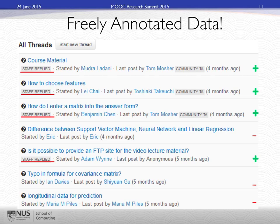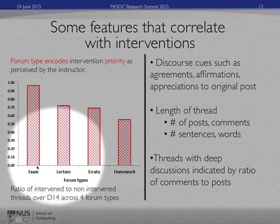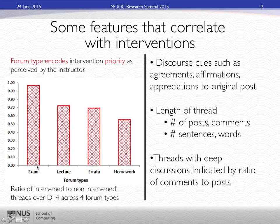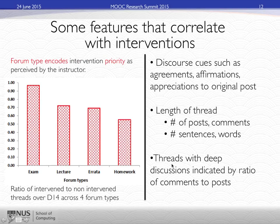By looking at the difference between whether something has been replied to or not, we can better understand what properties are linked with intervention. We find that certain features correlate with interventions through our nascent research. We have discovered that forum type encodes intervention priority very much — for example, exam topics are very crucial and timely, whereas discussion topics from homework usually do not. Other discourse cues, length of the threads, as well as threads with deep discussions usually indicate correlations to intervention.